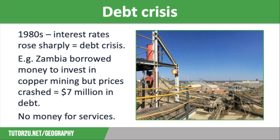There have also been instances where corrupt leaders used the loans they took out to fund their own lavish lifestyles rather than to invest in things that would help their countries. The debt crisis meant that LICs were spending a huge proportion of their GDP on repaying their debts, and therefore had little money to fund essential services such as education and healthcare, or to invest in important utilities like water supply, sanitation and electricity.